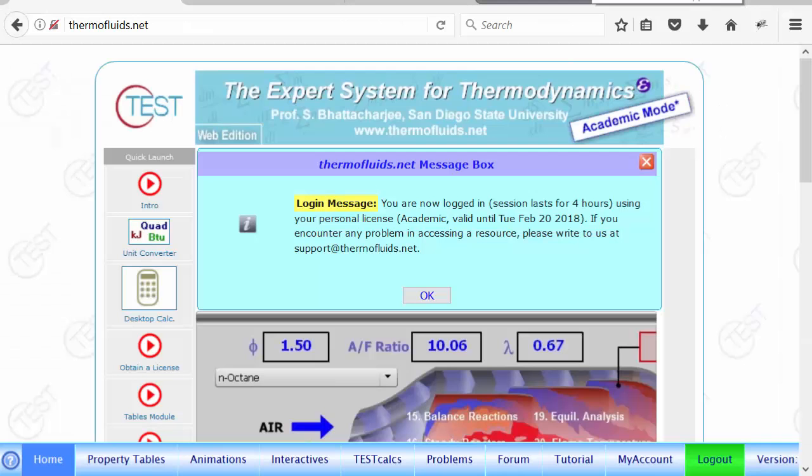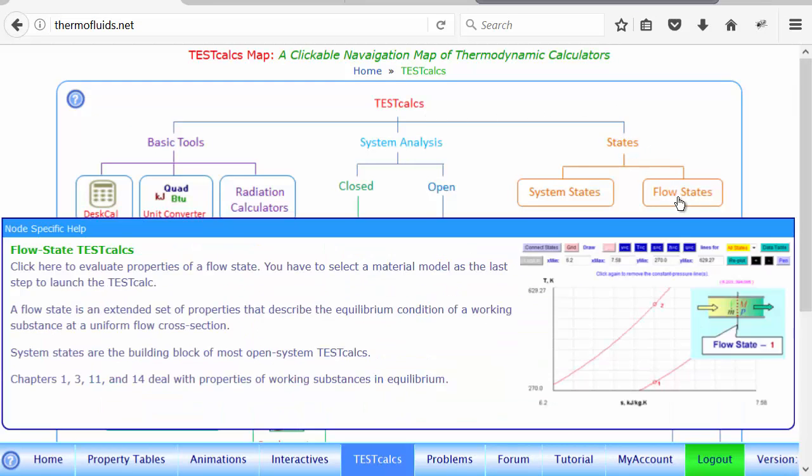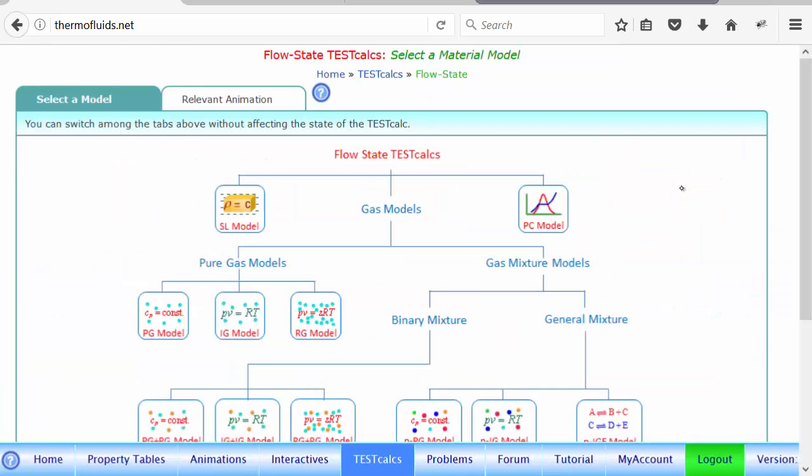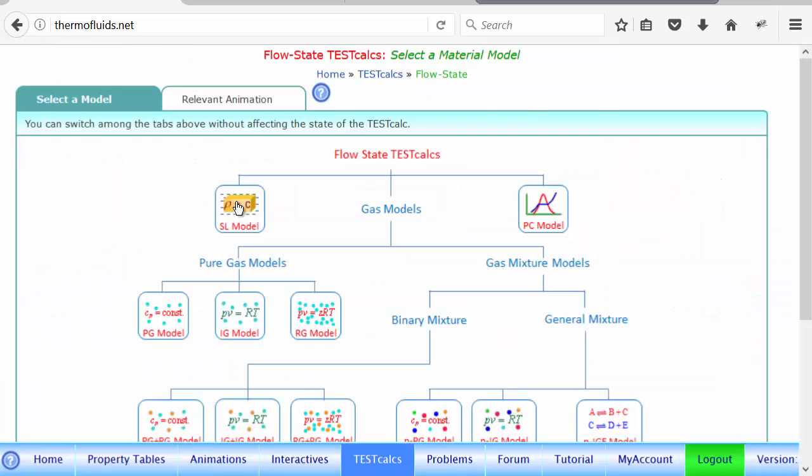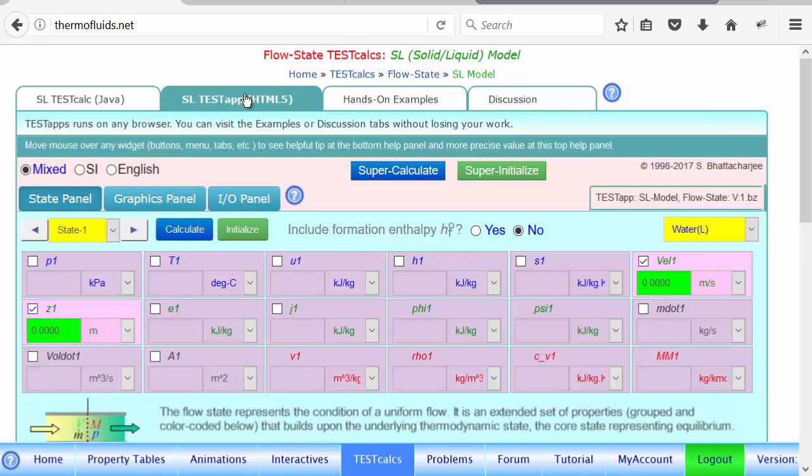I've already logged in and launched a suitable TestCalc. We want to evaluate properties of an extended flow state. So obviously this is the desired branch. We click here and then select the model. Notice that there is an HTML5-based app and a Java-based app. We'll go for the HTML5-based always because that will work in any browser.